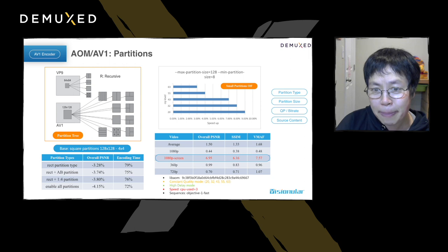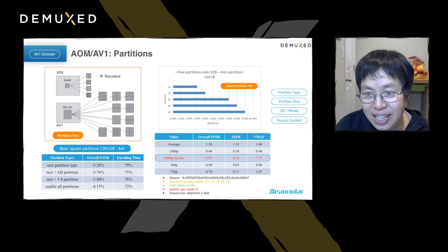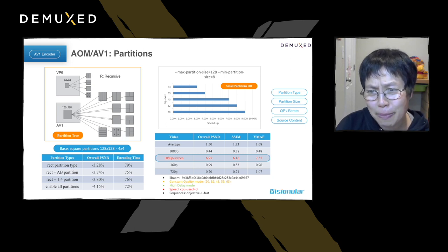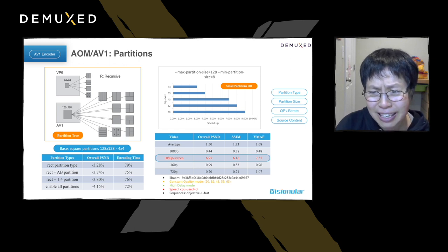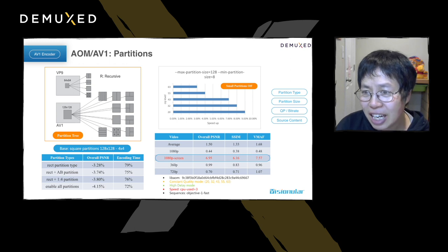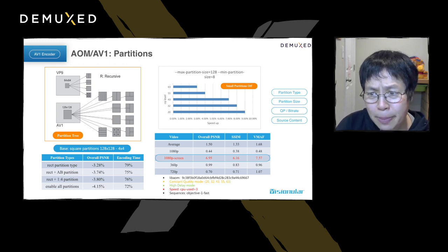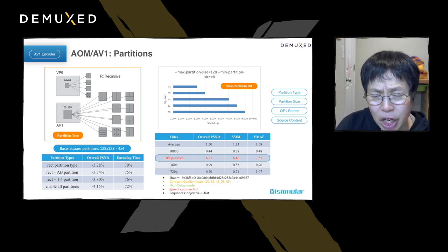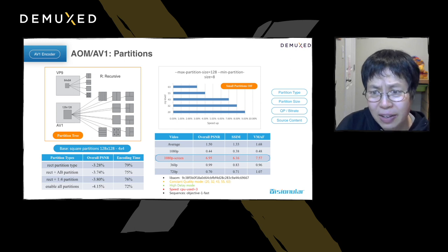There is another perspective for different content types. For 1080p screen content, turning off smaller partitions has a big impact — coding efficiency drops by as much as close to 7%, which is significant. This means that for different content types and different QPs, we can manipulate the partition set and partition type, which will have an impact on both encoder coding efficiency and encoder speed.